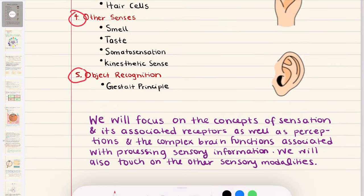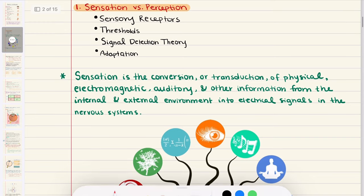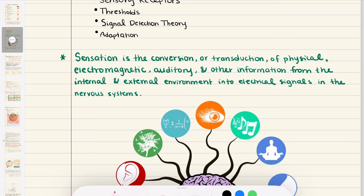Let's start with our first objective: Sensation versus Perception. In common day-to-day use, people often use sensation and perception interchangeably as synonyms. However, in the field of psychology, these two terms have very specific definitions and are commonly contrasted. Sensation more appropriately aligns with transduction — the conversion of physical, electromagnetic, auditory, and other information from our internal and external environment to electrical signals in the nervous system. Sensation is performed by receptors in the peripheral nervous system, which forward stimuli to the central nervous system in the form of action potentials and neurotransmitters. Sensation can therefore be thought of as a raw signal — unfiltered and unprocessed until it enters the central nervous system.